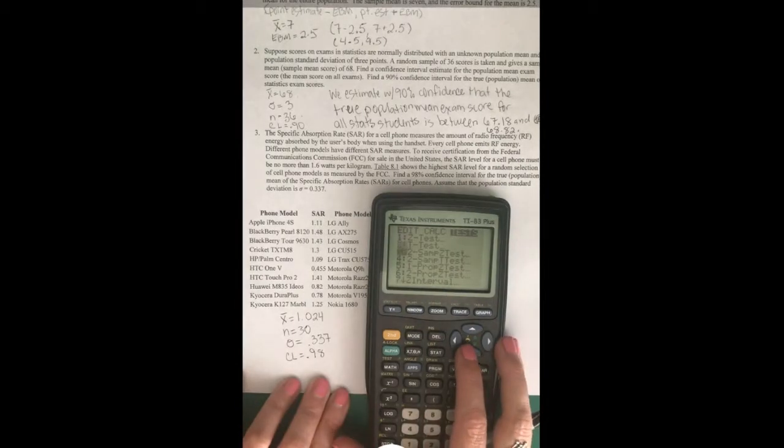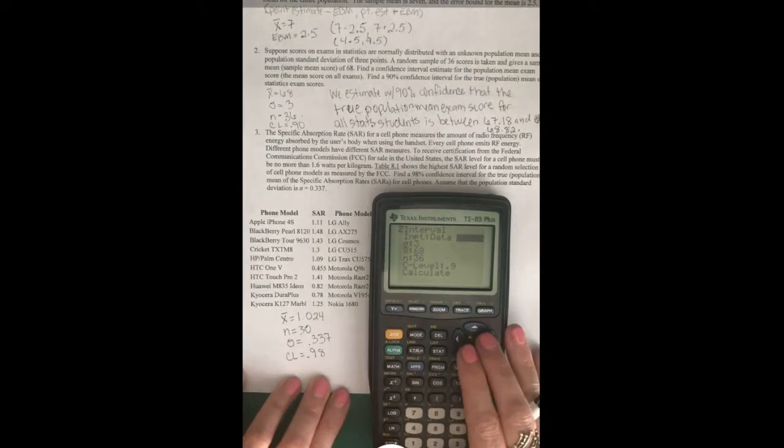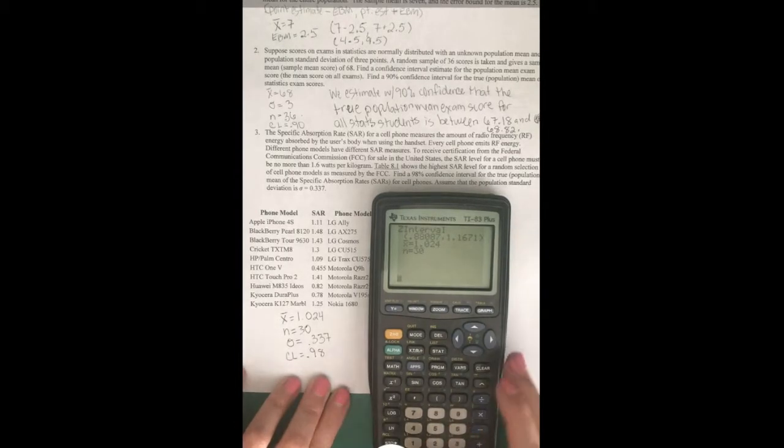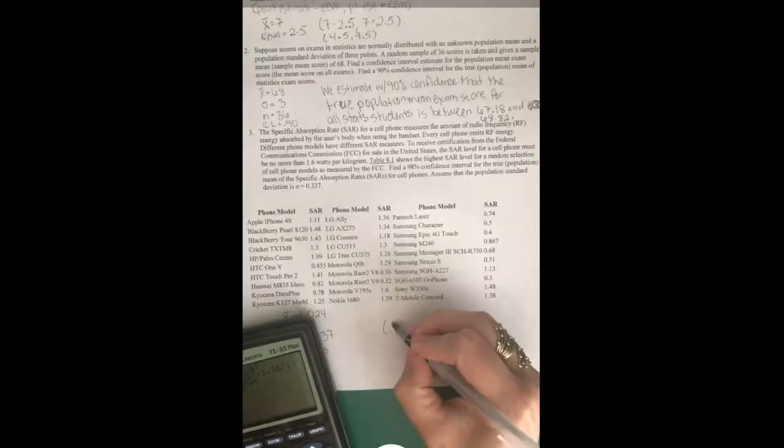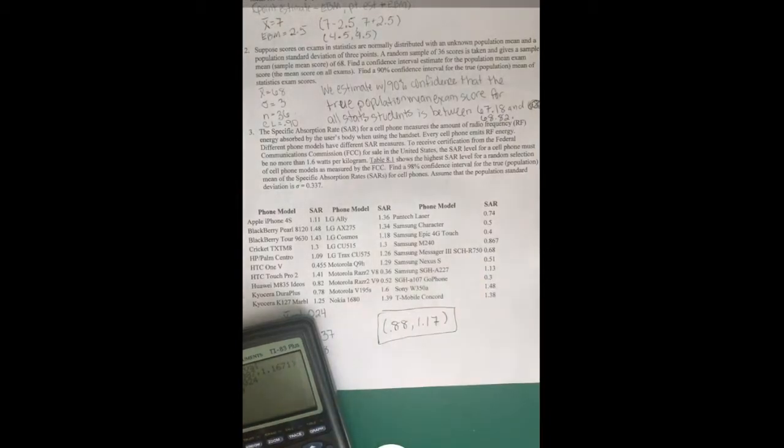We need to make sure this is on stats, then we enter in our information and calculate. The confidence interval is 0.88 to 1.17. That would be our answer.